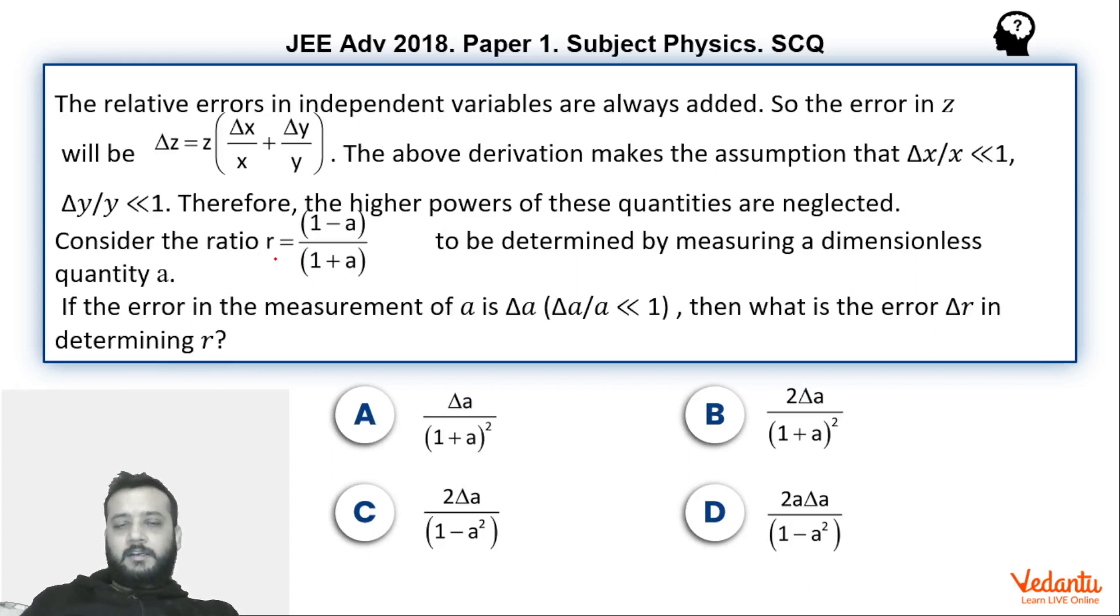The question says a quantity has been defined as r, which is called 1 minus a upon 1 plus a, where a is the value we have to measure. And the error that comes in measurement of a is such that delta a by a is much much less than 1. Using this we have to find the value of delta r.